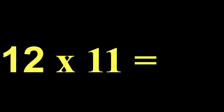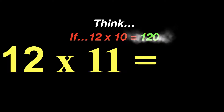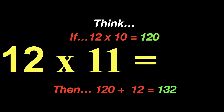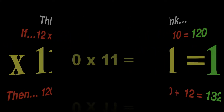12 times 11 — remember, we said we can only use the 11 rule up to 9, but what we can do is think of it this way: if 12 times 10 is 120, then 120 plus one more group of 12 would be 132. So 12 times 11 equals 132, and the more you do that, eventually you will memorize that fact.